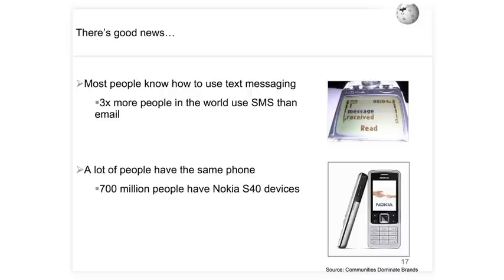There is good news when it comes to the delivery barrier. Most people know how to use a text message. Right now there are three times as many people in the world that use SMS than use email — an astounding statistic. More people know how to type on a phone than on a keyboard. And of the 3.7 billion people, about 700 million have a Nokia S40 device, making it a very common and targetable platform.